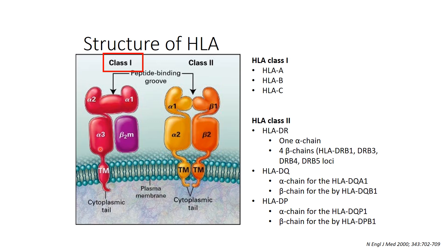Up to 2024, there are almost over 35 different HLA class 1 alleles. The three major genes for HLA class 1 are HLA-A, HLA-B, and HLA-C.